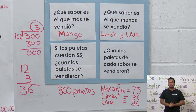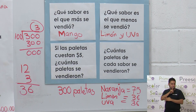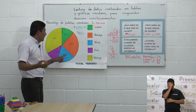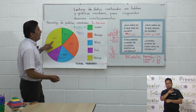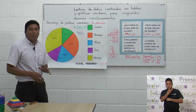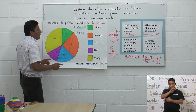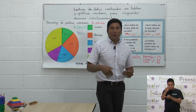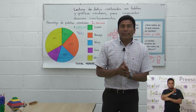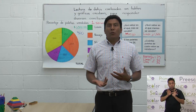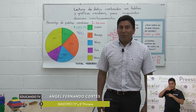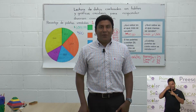Nada más nos quedan dos porcentajes por resolver, que se quedarán como tarea. Tendrán que multiplicar 3 por 18 para el mora, y 3 por 33 para el mango. Así calcularán la cantidad de paletas que representa cada porcentaje. Niños y niñas, esa es una tarea que se queda para ustedes. Es importante que lo compartan con sus compañeros y con su maestro para seguir fortaleciendo sus conocimientos. Soy el profesor Ángel Fernández, me da mucho gusto estar contigo y compartir desafíos matemáticos en Educando TV. ¡Hasta la próxima!